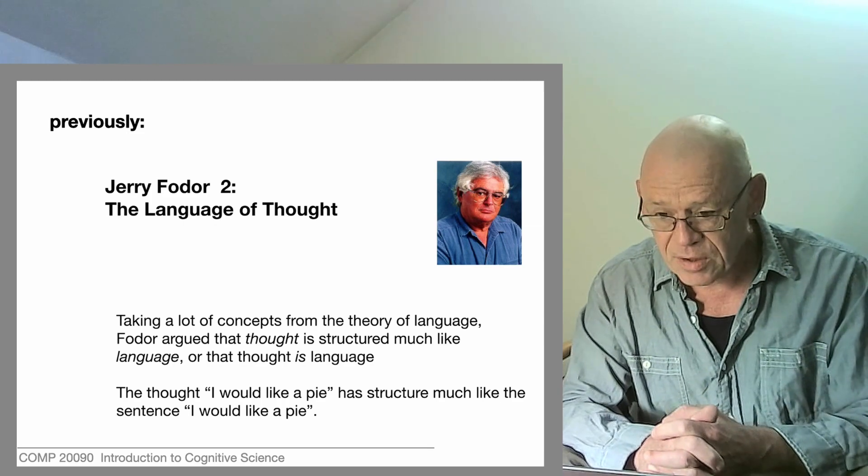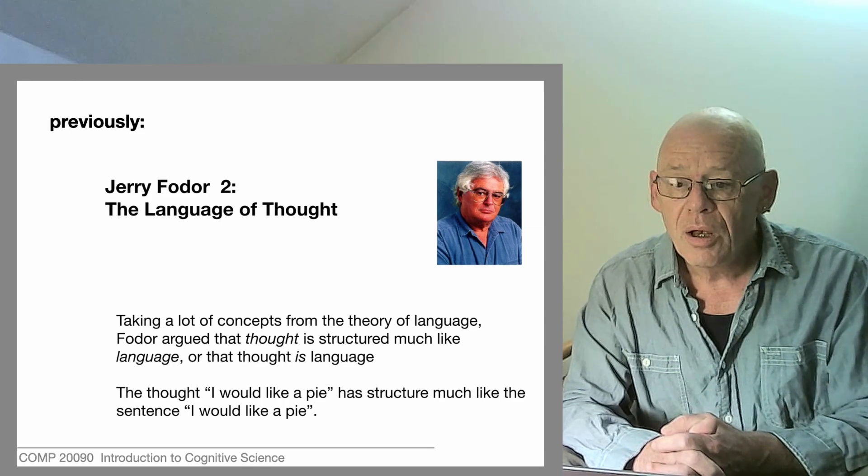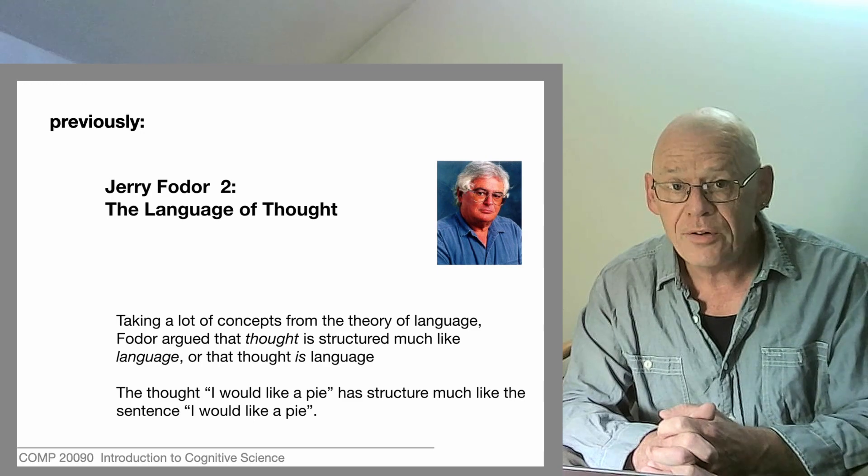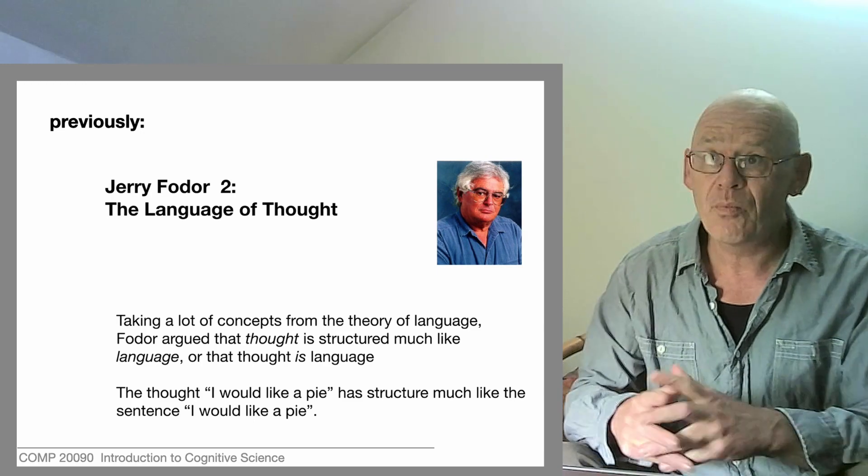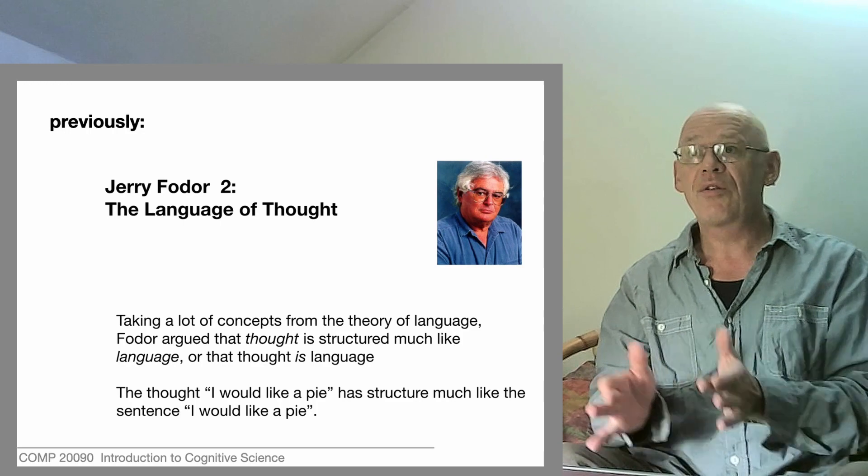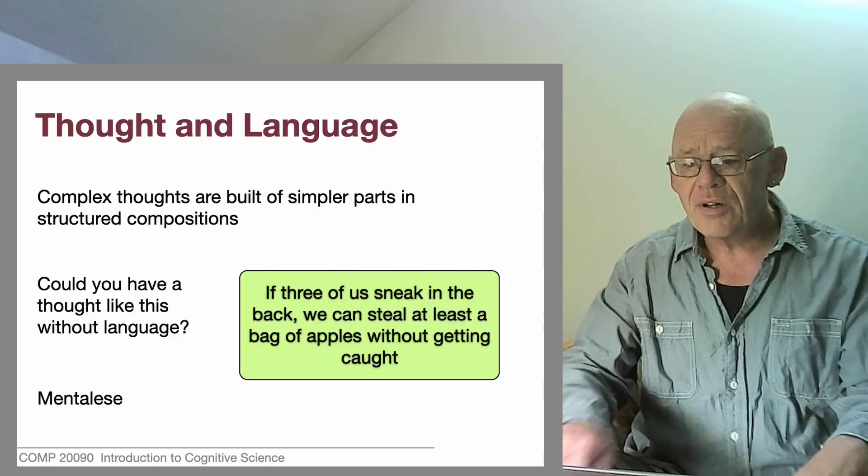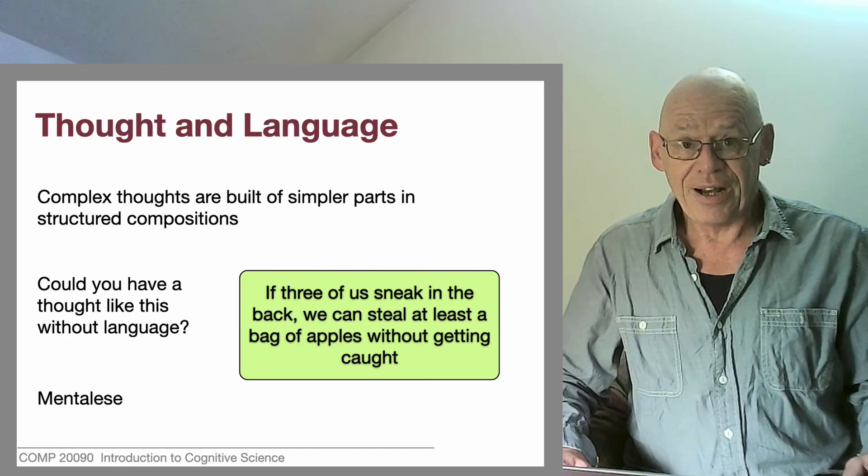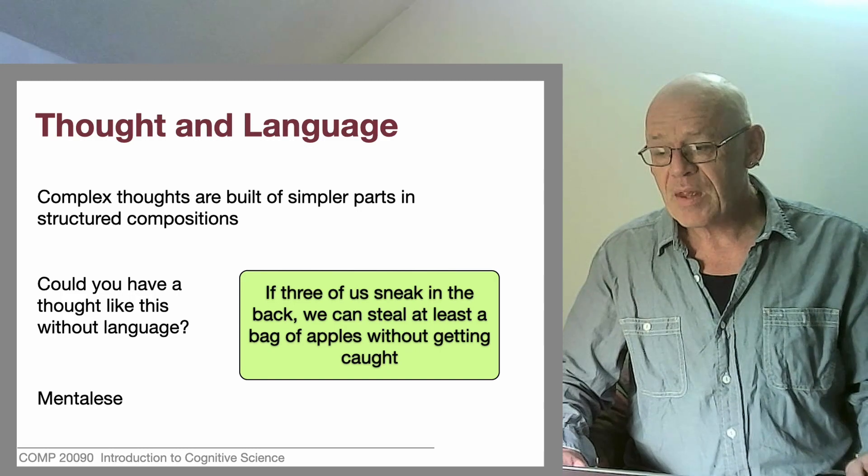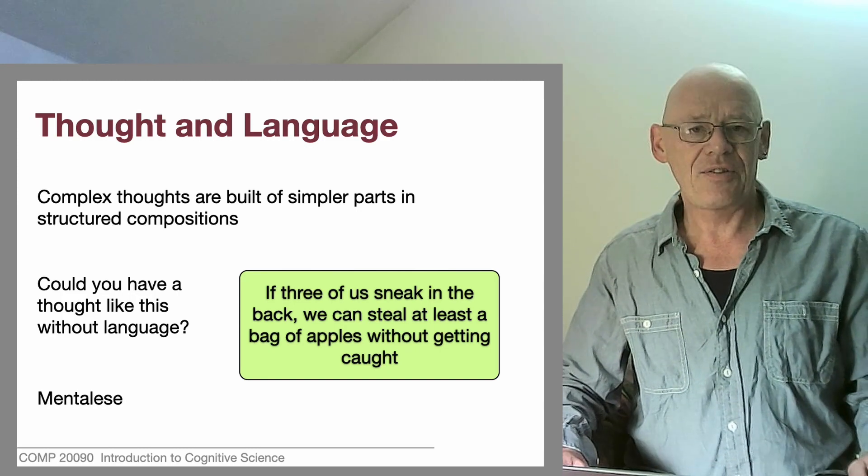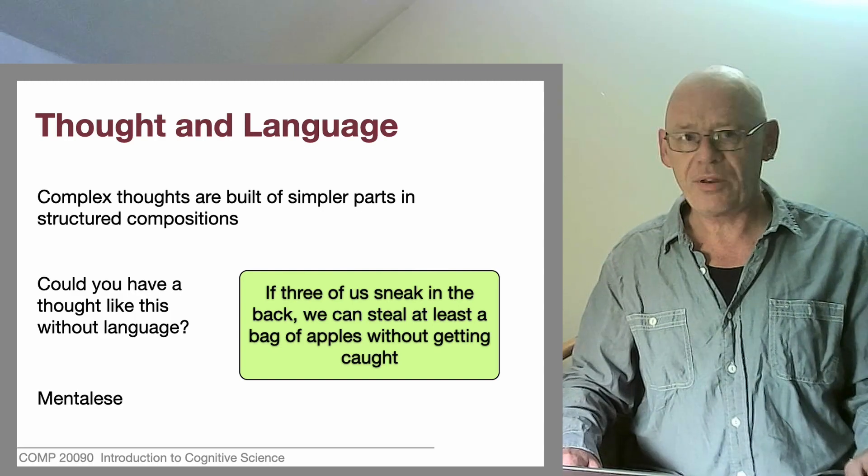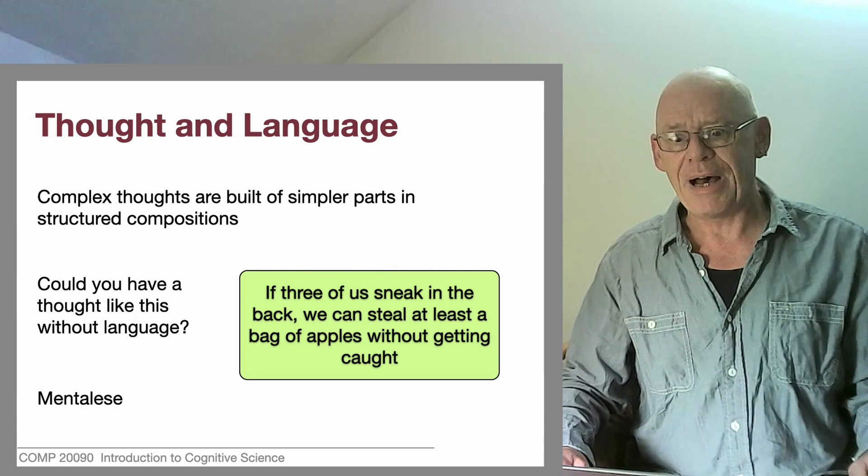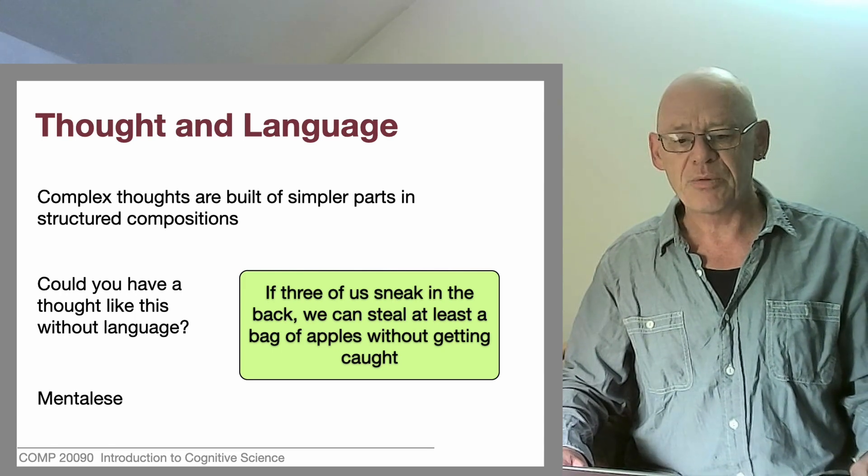Now, he's not claiming that all of thought is of this nature. And we shouldn't mistake this hypothesis for that idea. But it's worth looking into the relationship between some ways of thinking and some structures we find in language. So here's an example of a sentence, a linguistic sentence written down there in words. But I can imagine having this as a thought. I don't know if you can imagine having this as a thought. That's for you to try out. It goes like this. If three of us sneak in the back, we can steal at least a bag of apples without getting caught.